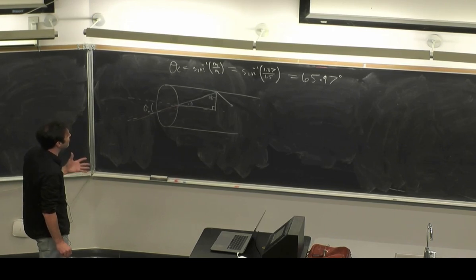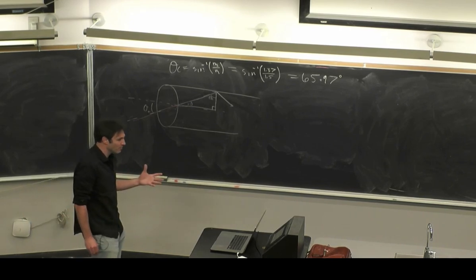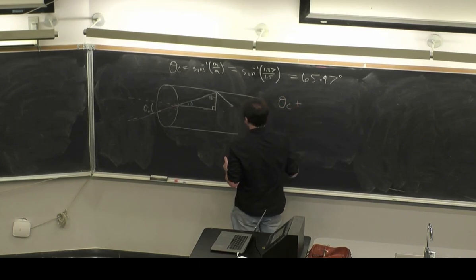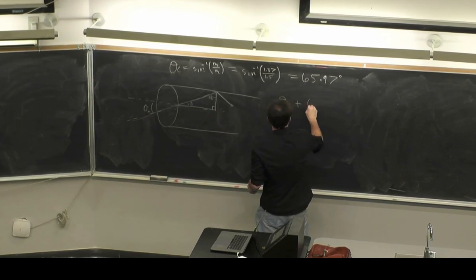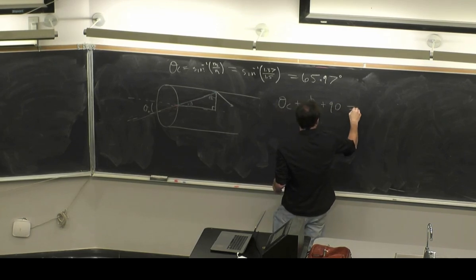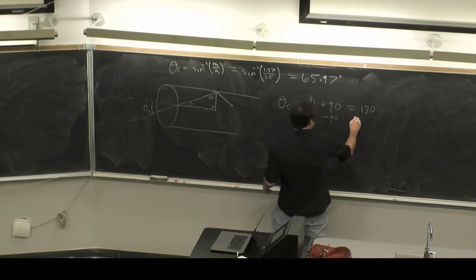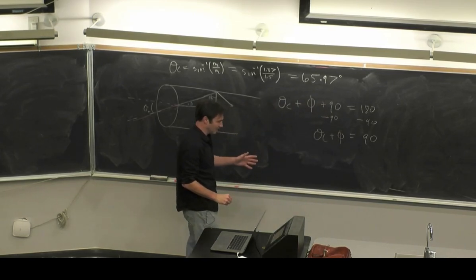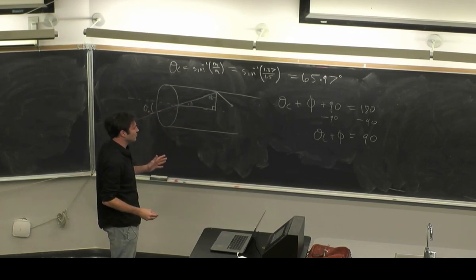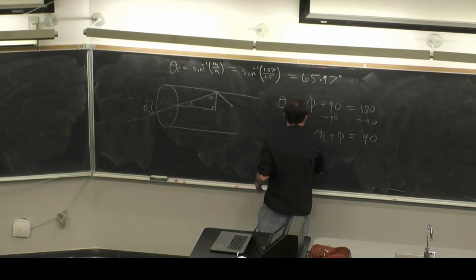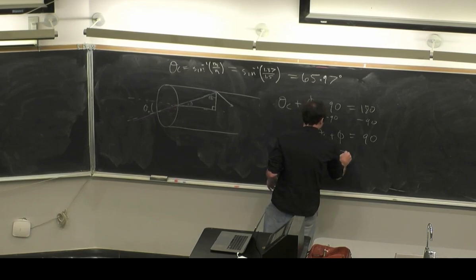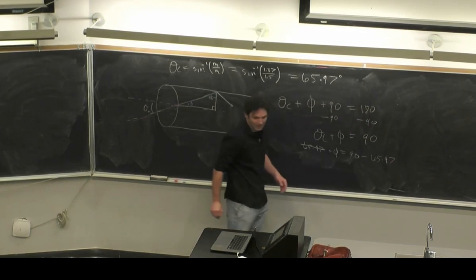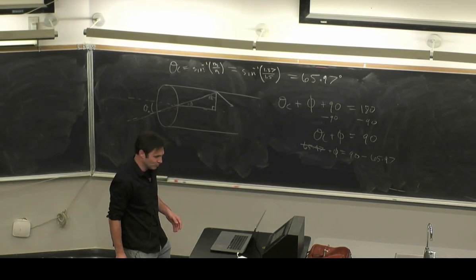We've got theta critical, and we know that the total angles of a triangle have to add up to 180. We've got a 90-degree triangle here, so theta critical plus phi plus 90 equals 180. Subtracting 90, we get theta critical plus phi equals 90. We know theta critical is 65.97, so 65.97 plus phi equals 90, which gives us phi equals 24.03 degrees.